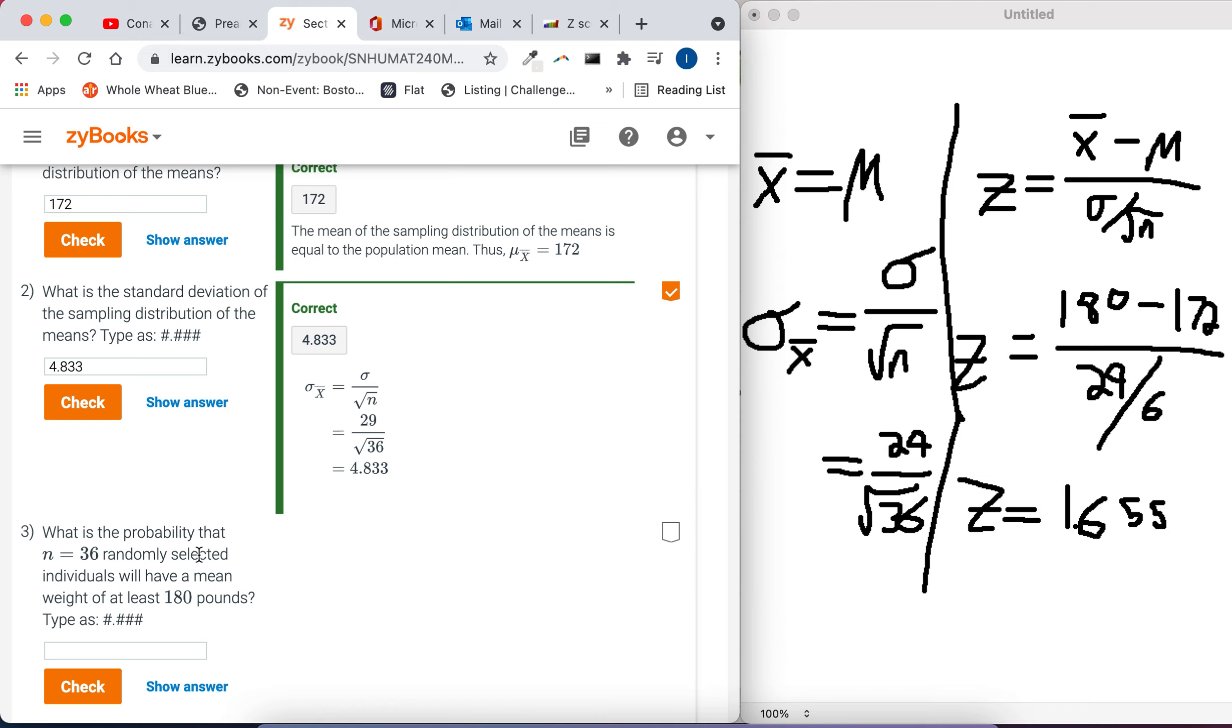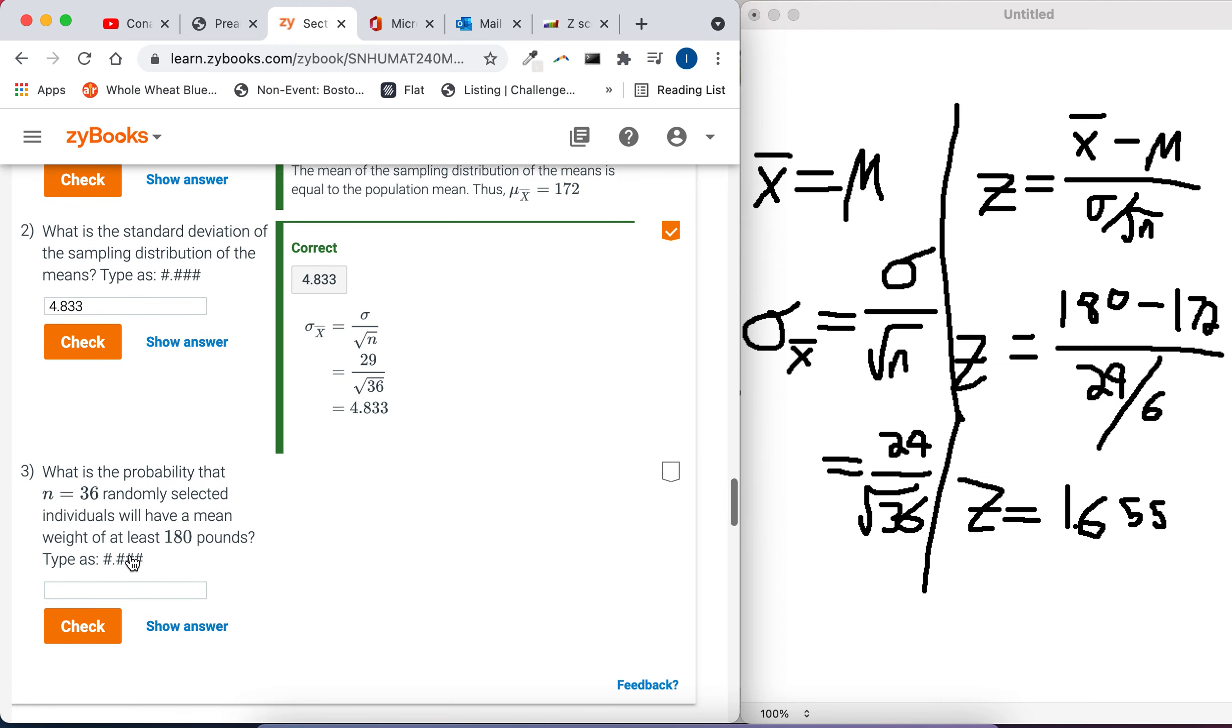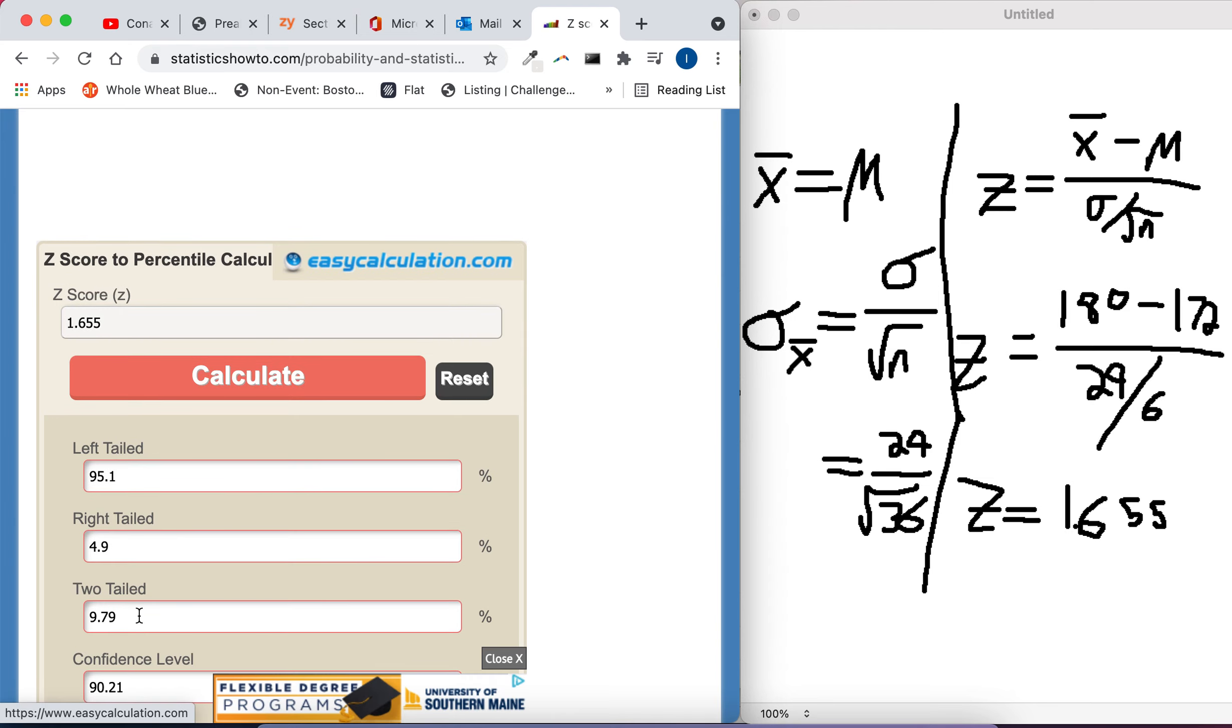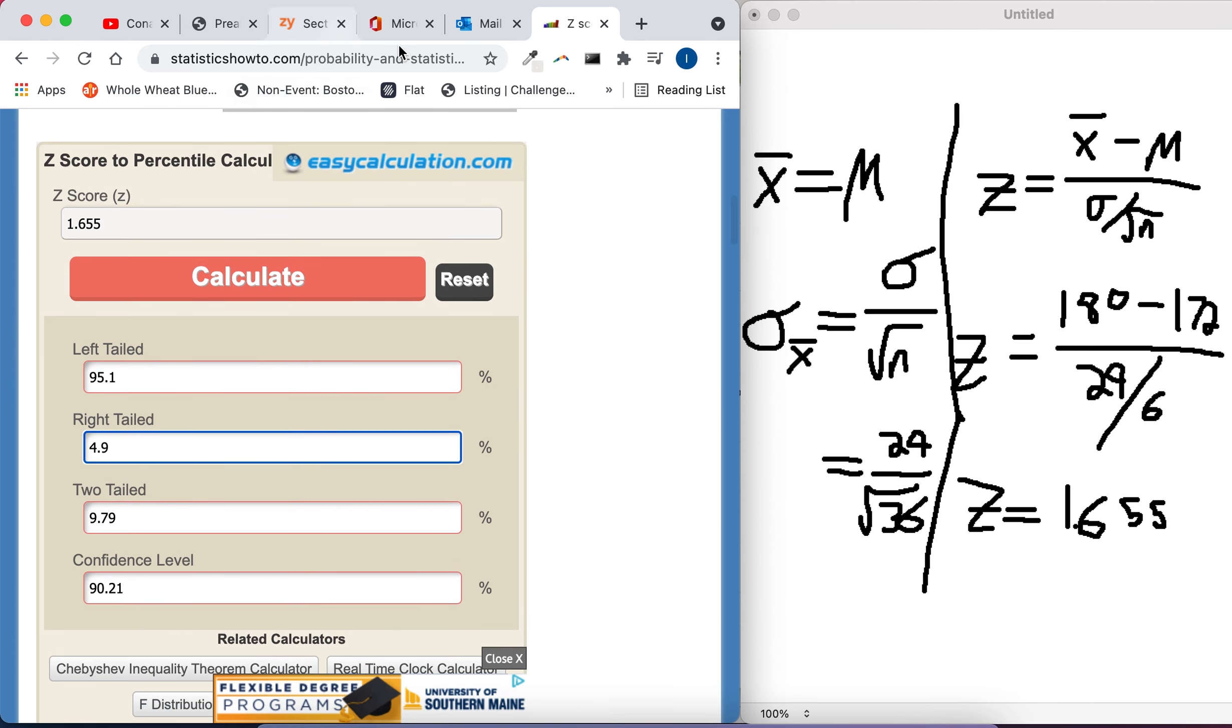And if you remember, they asked for the probability that n equals 36 randomly selected individuals will have a mean weight of at least 180 pounds. At least means, like, this is the smallest amount it can be. We want a right-tailed probability. We want it to be greater than or equal to 180. So we want a right-tailed value. So that's a percentage. That's not a probability, okay? 4.9%.